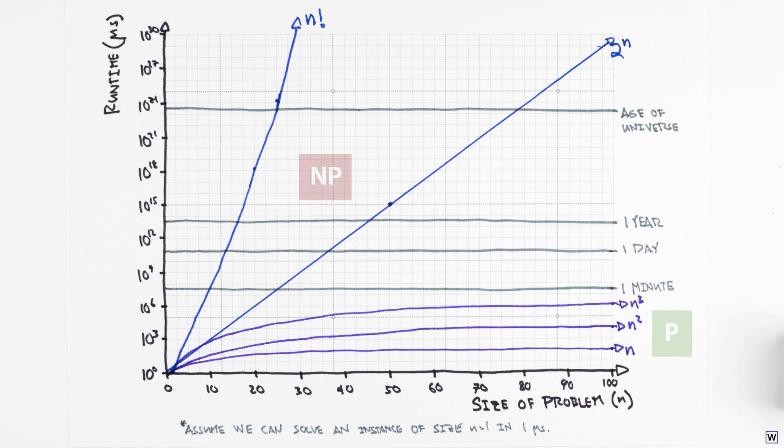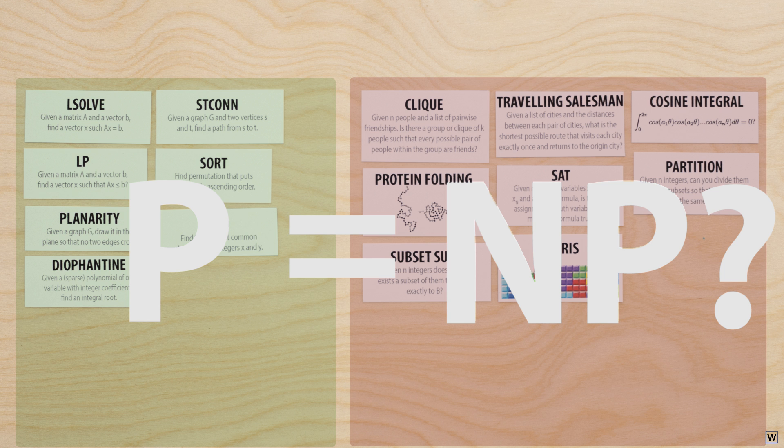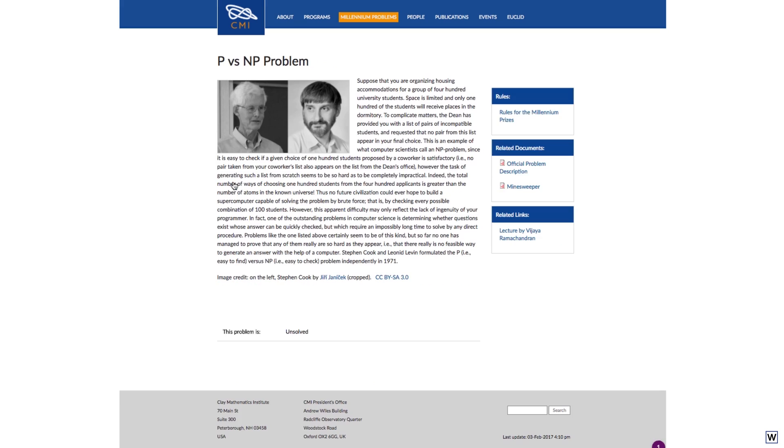Even more interestingly, while widely believed to be true, proving that P is actually different than NP remains an open research question, and a proof either way is worth a cool $1 million from the Clay Mathematics Institute.